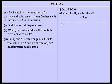Part two: when and where does the particle first come to rest? There are two parts — when and where. We write down our displacement equation and work out the velocity, because coming to rest means velocity equals 0. The derivative of 5 is nothing. The derivative of minus 3 sine 2t works out to be minus 6 cos 2t.